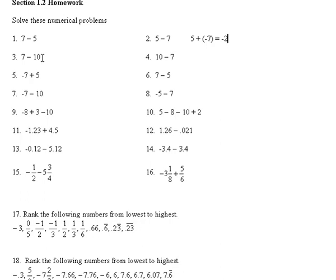7 minus 10 is the same type of thing — we're subtracting off a larger number than what we have, so the answer would be negative 3. 10 minus 7 is just plain old 3.